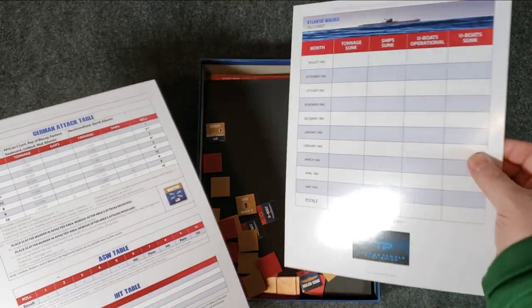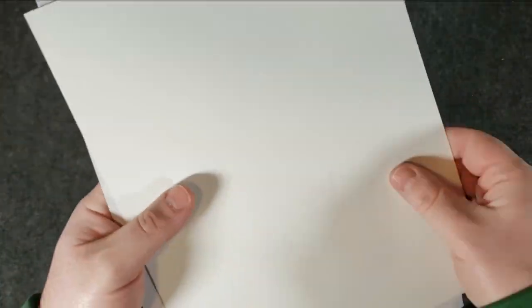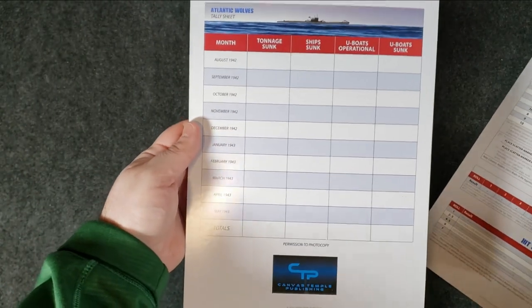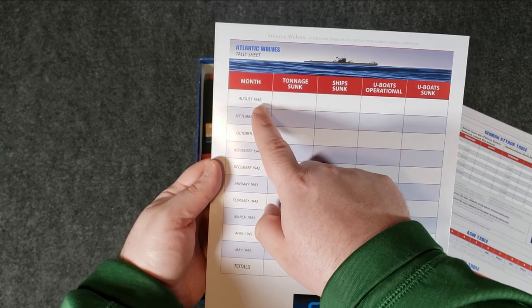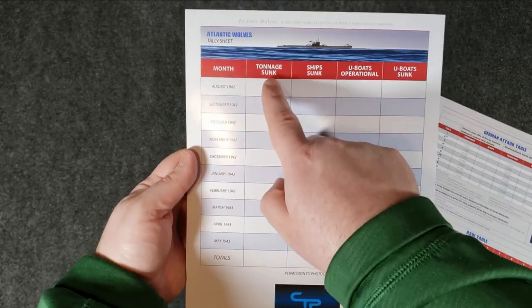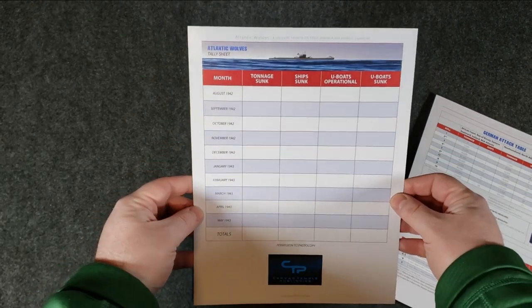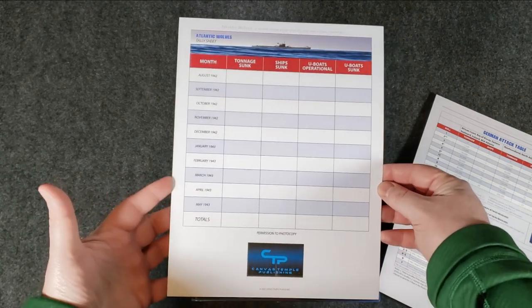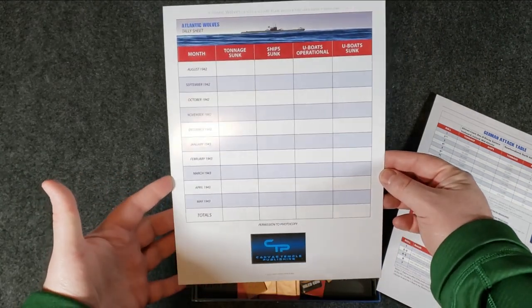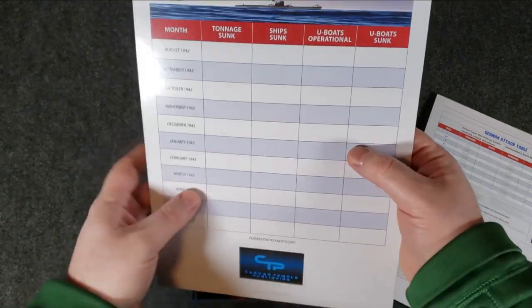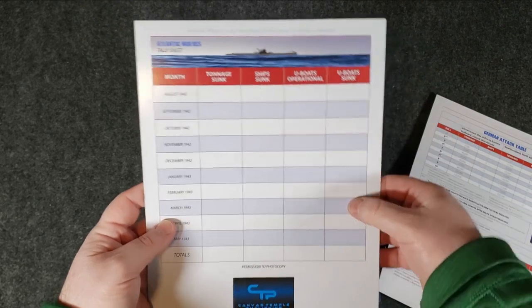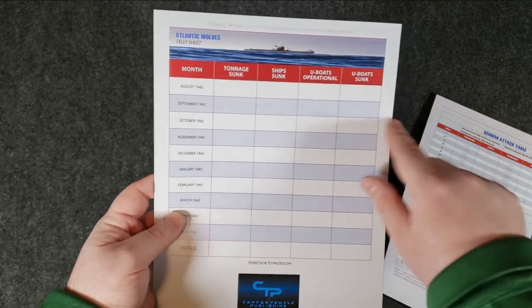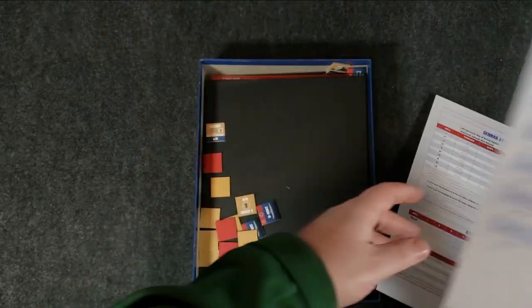Let's try to save the counters for last. All right. So, we have, oh, super thick cardboard here. So, we have that tally sheet we saw at the back of the rule book. Keeping track each month, August 42 to May 43. Tonnage sunk, ships sunk, U-Boats operational, U-Boats sunk. Keep track of everything. I like that. There's nothing on the backside. Obviously, I'll make some copies of this. I don't think you could draw on this one. No, I don't think so. I think you want to make copies. No big deal. All right.